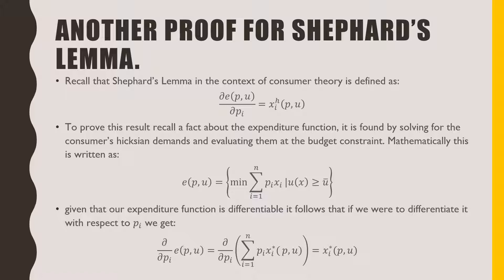Given that our expenditure function is differentiable, it follows that if we were to differentiate it with respect to the price of good i, we would get the partial derivative of our expenditure function with respect to the price of good i is equal to the partial derivative of our budget constraint evaluated at the Hicksian demands with respect to the price of good i, which then gives you our Hicksian demand for good i.